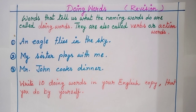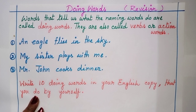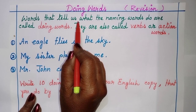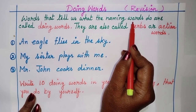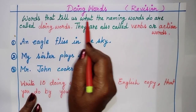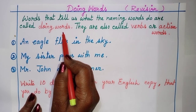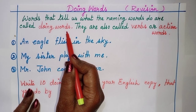Today we will do the revision on doing words. First, let us learn the definition. I think you children know, but let's do the revision once again. Words that tell us what the naming words do — naming words means a person, place, animals, or things — are called doing words.